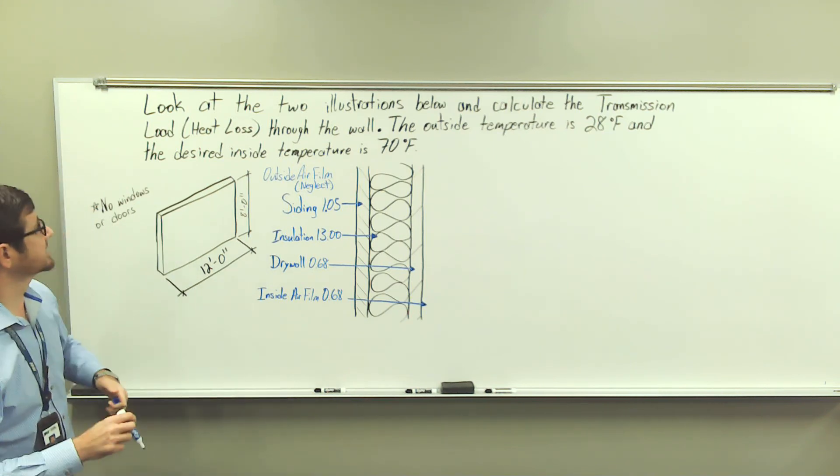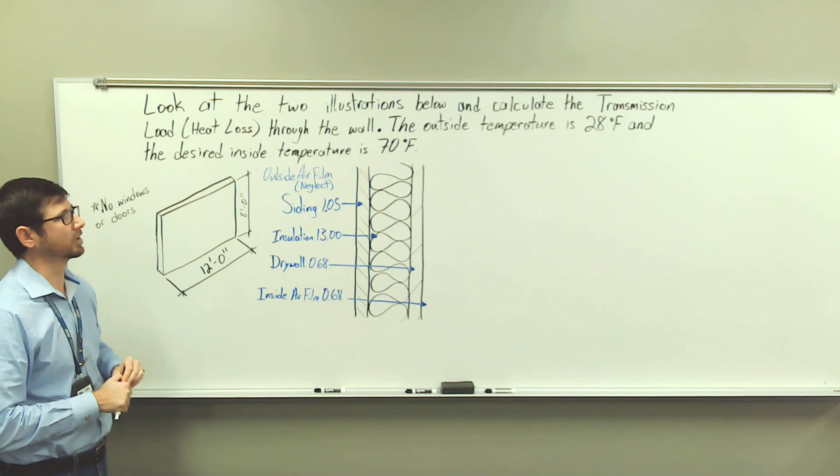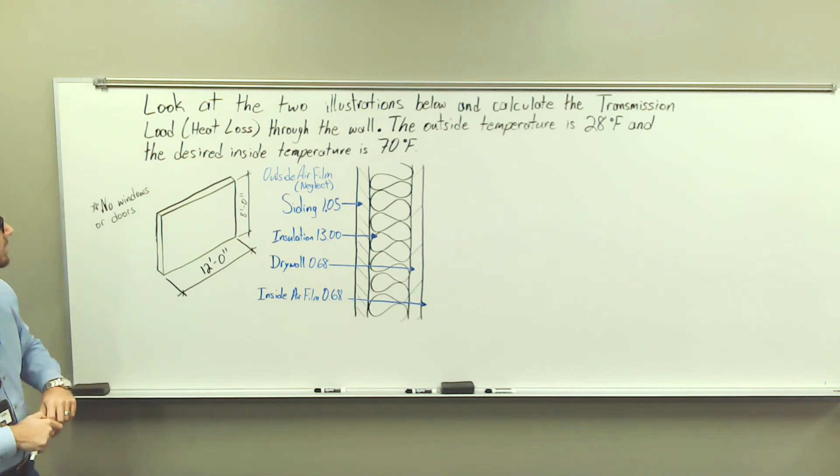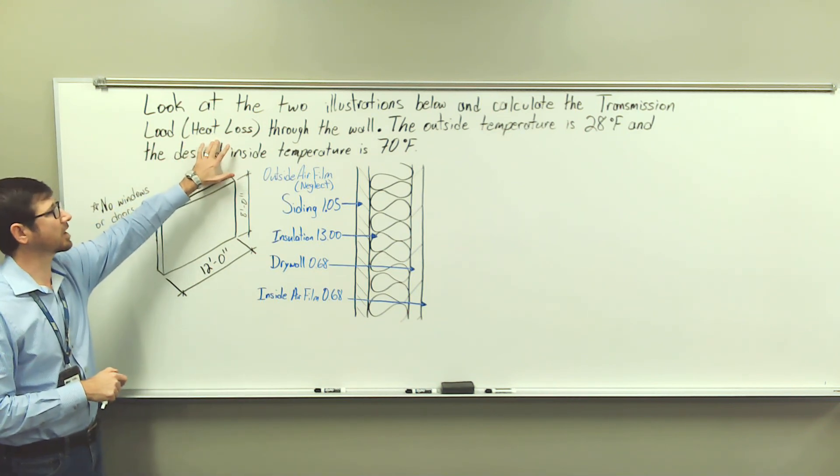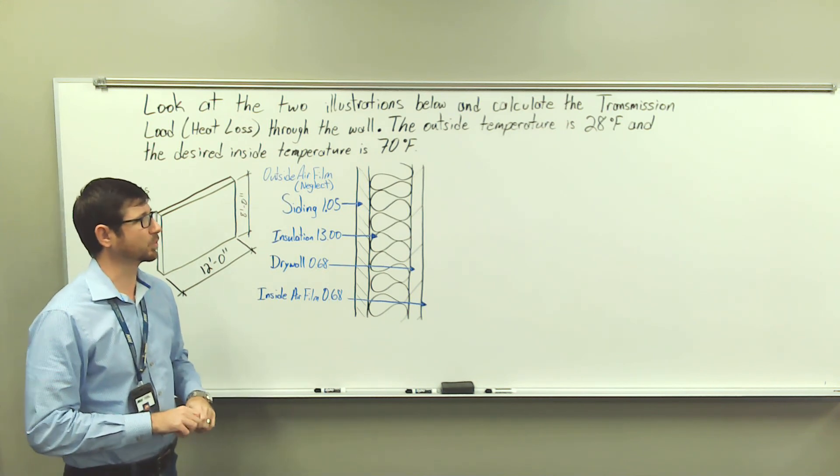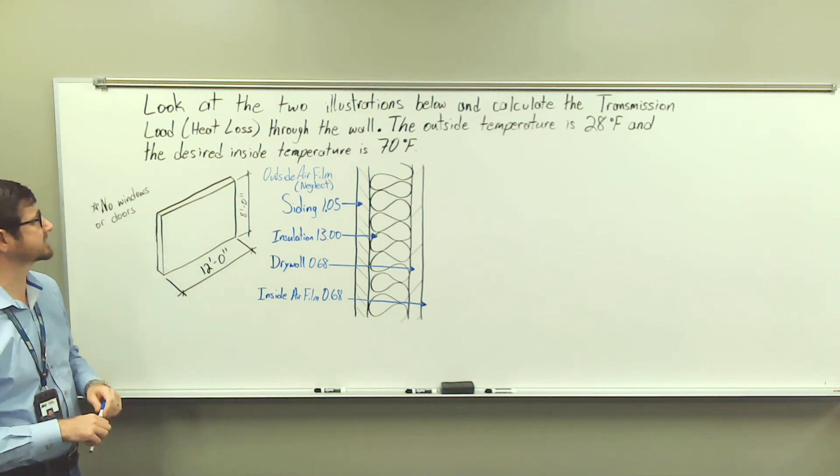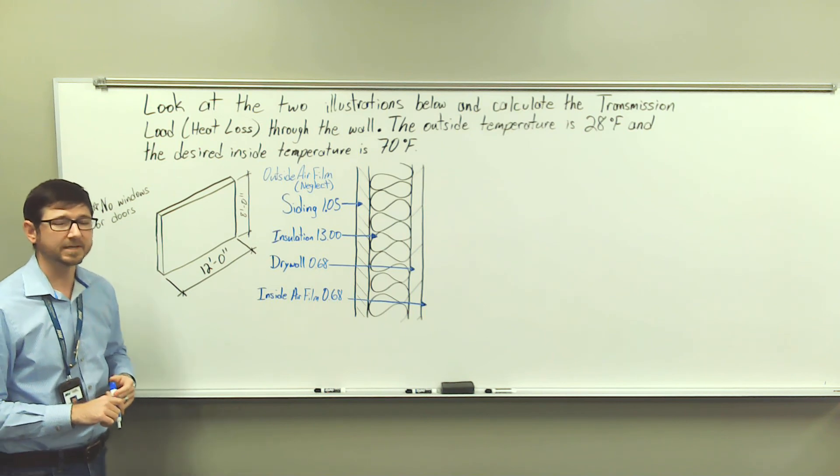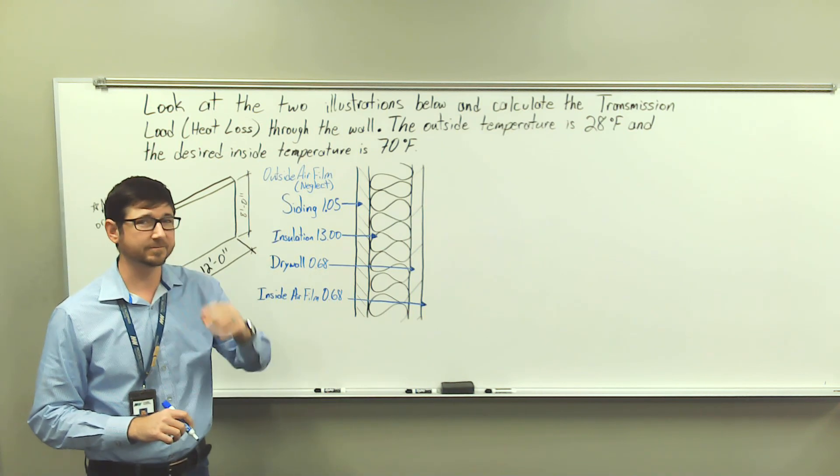It says look at the two illustrations below and calculate the transmission load, also known as the heat loss, through the wall. The outside temperature is 28 degrees Fahrenheit and the desired inside temperature is 70 degrees Fahrenheit.